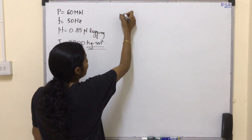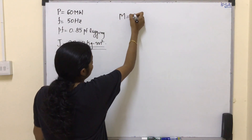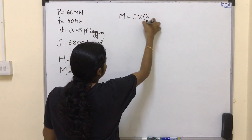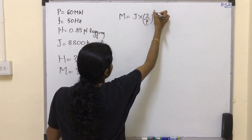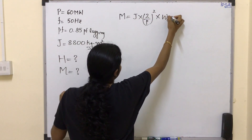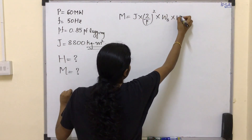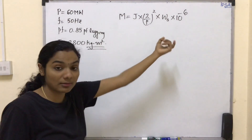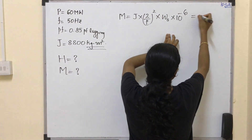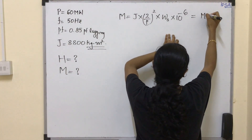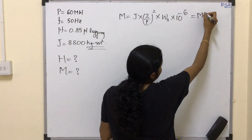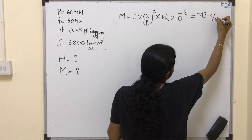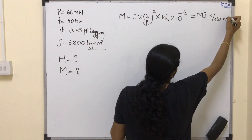We know M is equal to J multiplied by (2/P)² into ωs into 10⁻⁶. With 10⁻⁶ applied to scale the units, we get J in MJ per electrical radian.